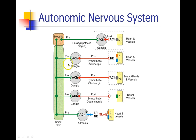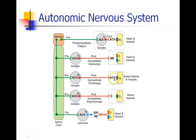Acetylcholine is not only in the parasympathetic ganglion — it's in all ganglia, binding to nicotinic acetylcholine receptors. Acetylcholine is essentially everywhere. There are a few rare cases in the sympathetic system where acetylcholine is the second neurotransmitter, specifically in sweat glands and in certain blood vessels, but this is really an exception.